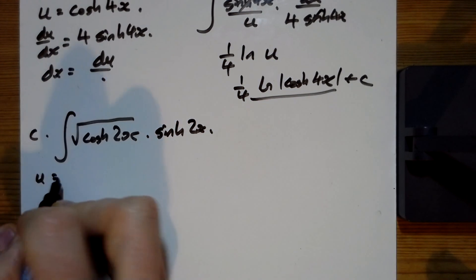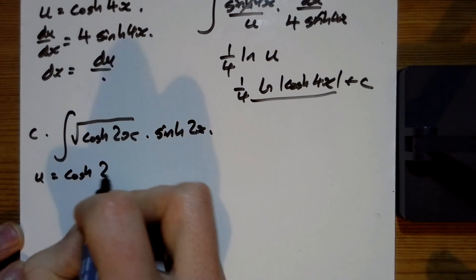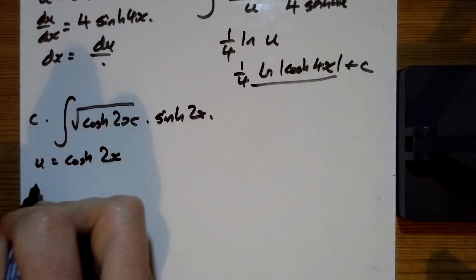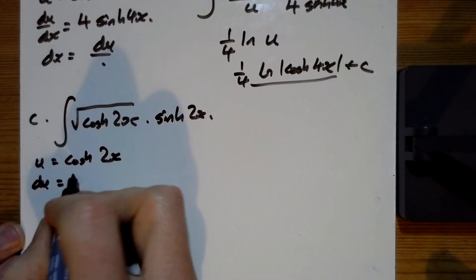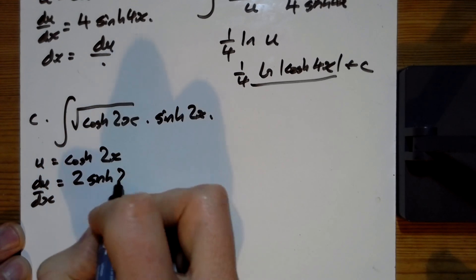And can hopefully see that u is going to be the bit in the bracket here, I always say to my math students, it's the bit that we've got doing something to. Differentiating that gives us two sinh two x.